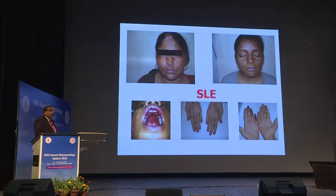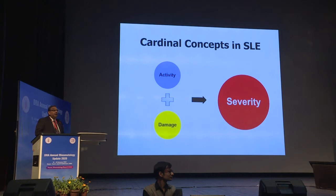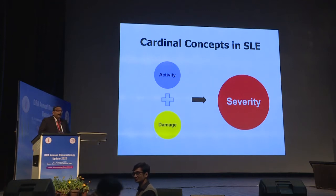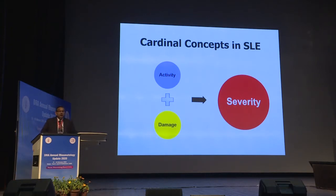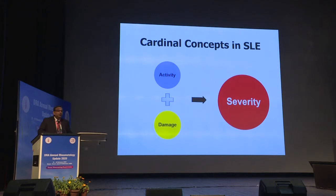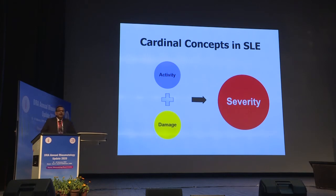Lupus is the flagship connective tissue disease and we match the intensity of treatment to the aggressiveness of the disease. In contradistinction, disease damage is the time when you back off — this is irreversible damage present for six months or more. If you have class 6 nephritis or end-stage renal disease, back off and think of renal replacement. An astute clinician knows when to escalate and when to de-escalate, and the amalgam of activity and damage is called severity.